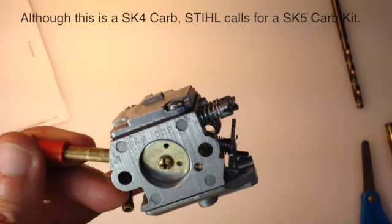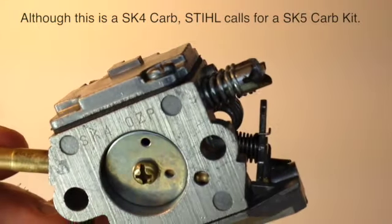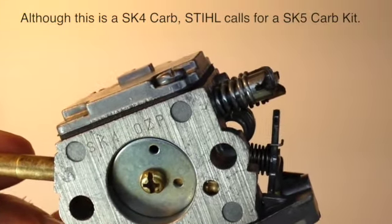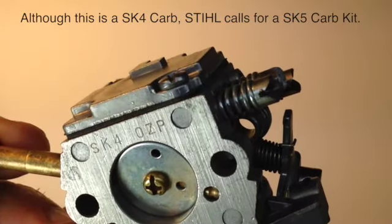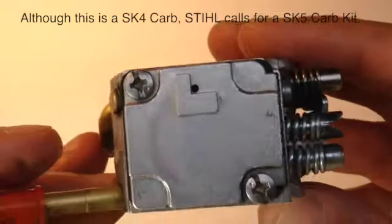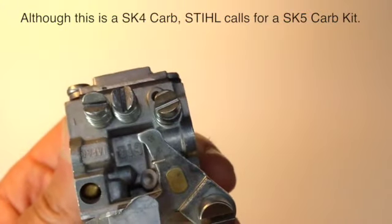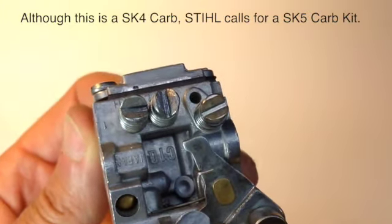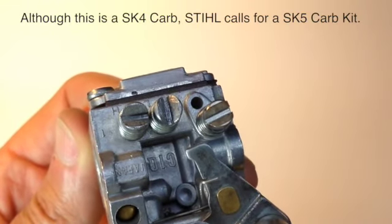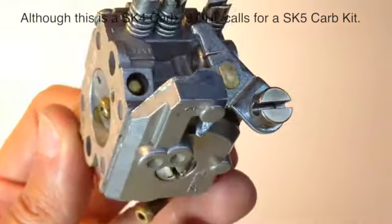You can see as I zoom in, this is a SK-4. It's stamped right there, SK-4-0-ZP. It's a Stihl carburetor, Zama's the brand, but it's off a Stihl FS 106 trimmer. It's about 26 years old.